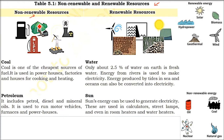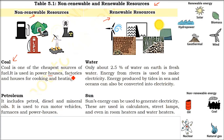Let us look at some examples. LPG once used will not come back easily, but wind, air, or water can be replenished and will never be destroyed. In non-renewable resources, the first example is coal — one of the cheapest sources of fuel, used previously and still used today in powerhouses, factories, and for cooking and heating purposes.